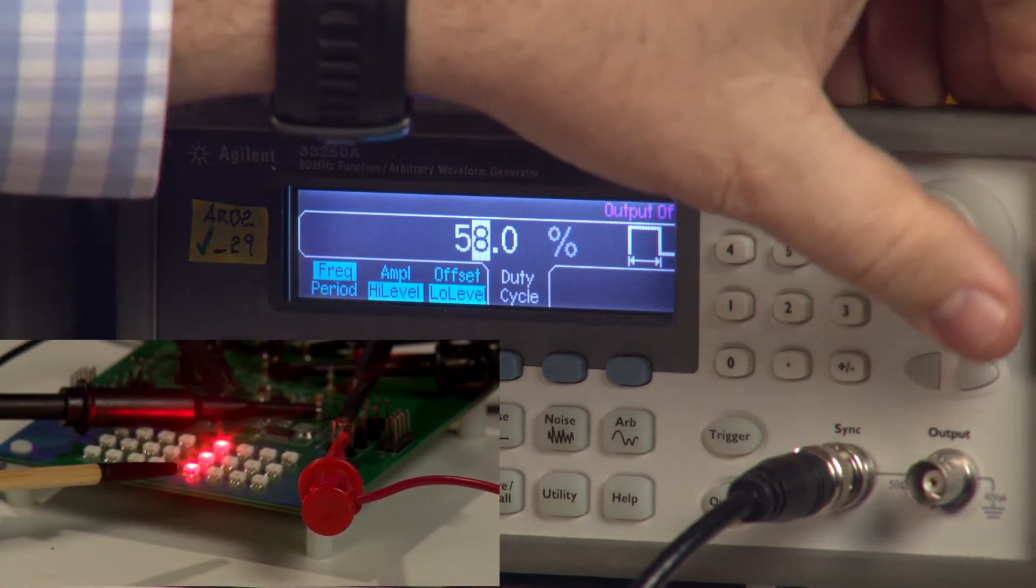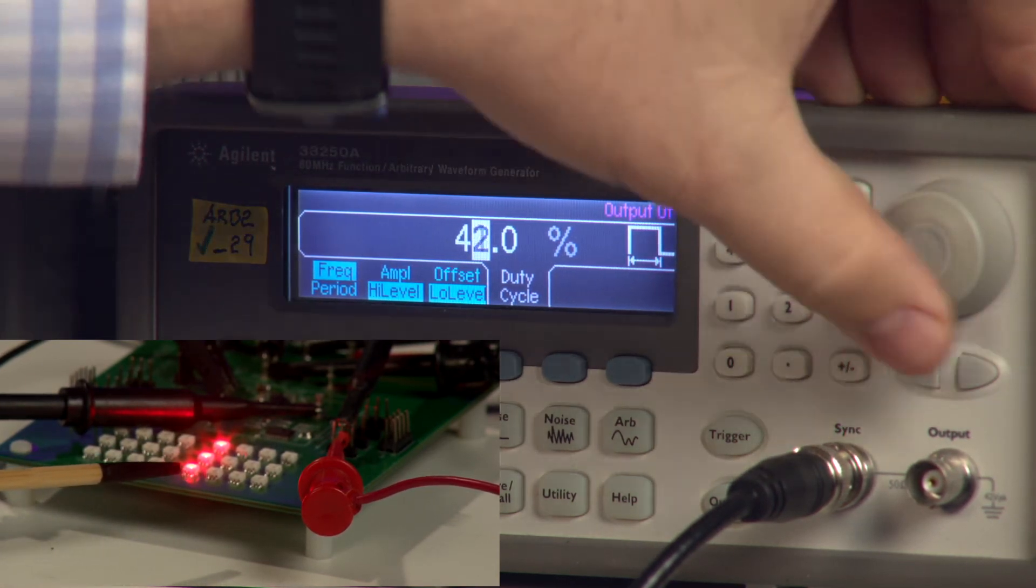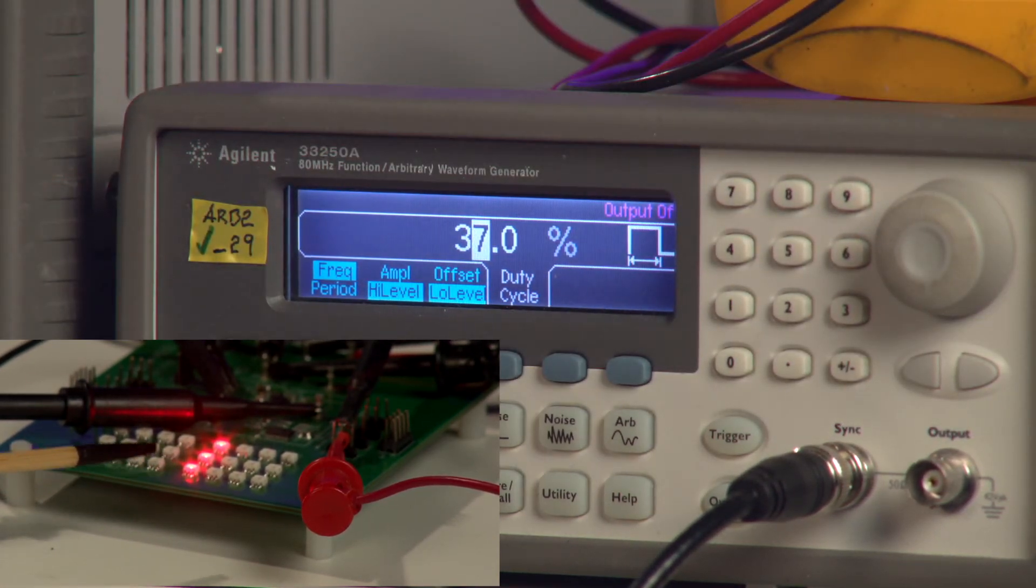And then as I decrease, the illumination will go down. But it's linear, crisp, and no distortion.